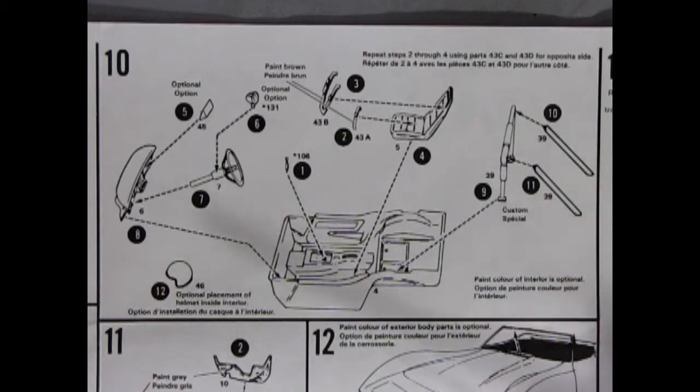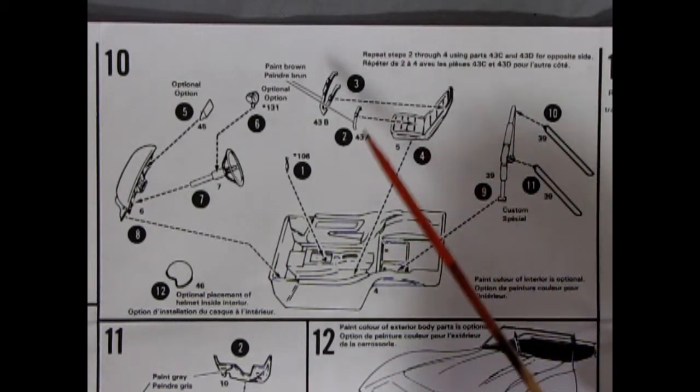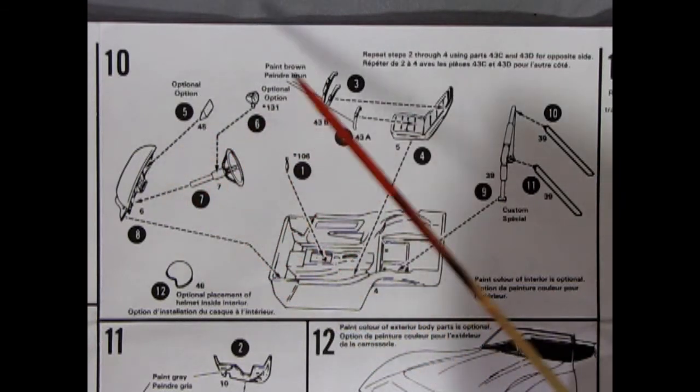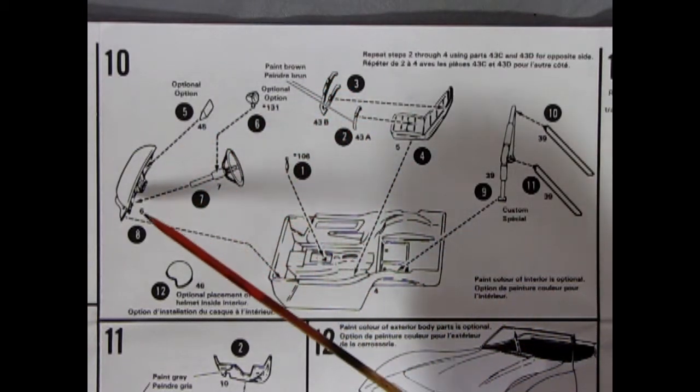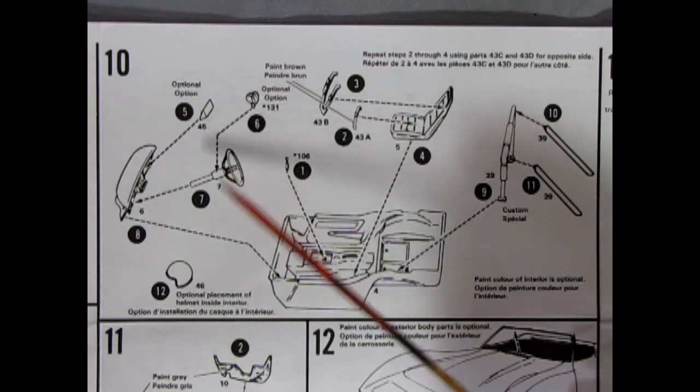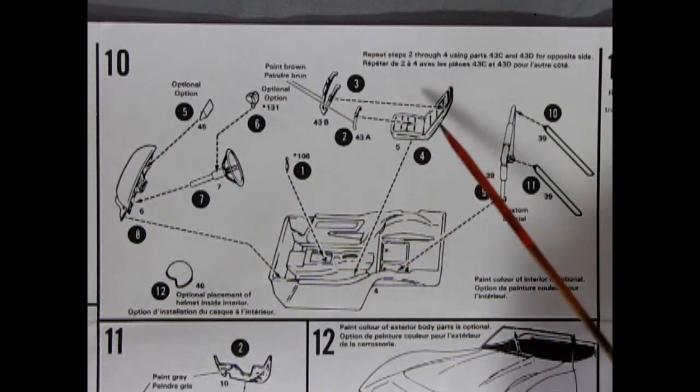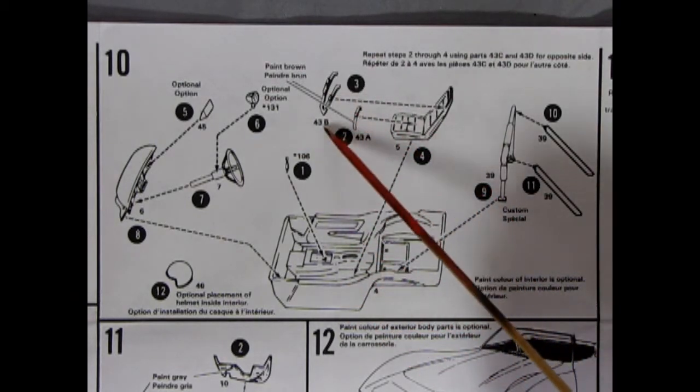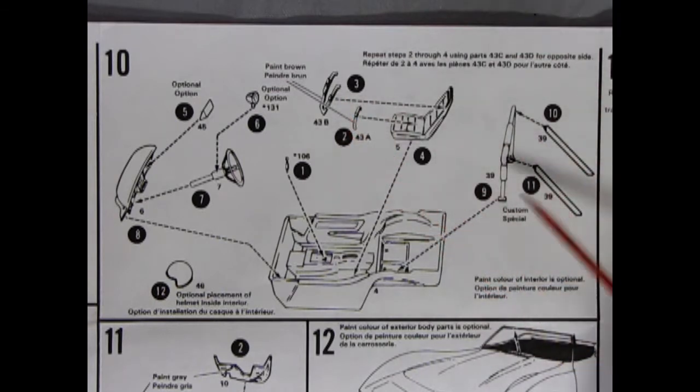Panel 10 shows our interior going together and you do have a choice of stock or racing as we can see here. So we have our dashboard with an optional piece gluing on here. Our steering wheel and console and then the optional tachometer. We have a race helmet which you can place anywhere in the car. Then you have your stock bucket seats going in place and you can also add in the four-point racing harness. And here we have an optional roll bar with the two braces in the back. Very nice racing interior.